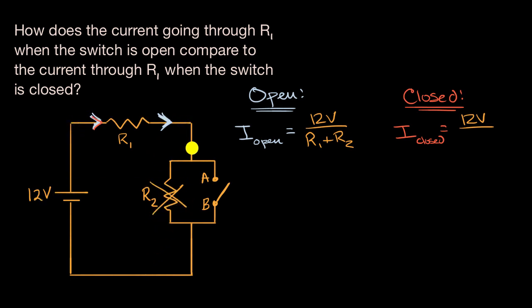The current will just go through R1 and then follow the path of least resistance, literally. And so in this situation, our current is going to be 12 volts divided by, you essentially just have one resistance, divided by R1.